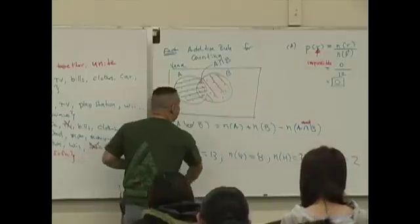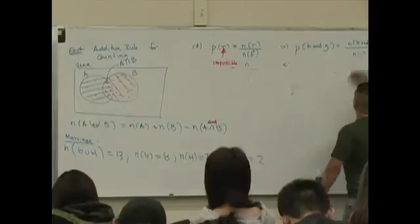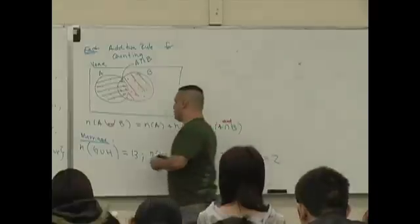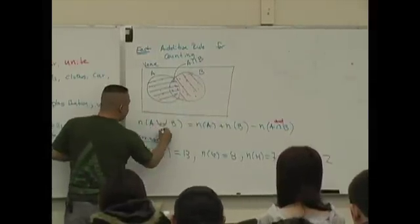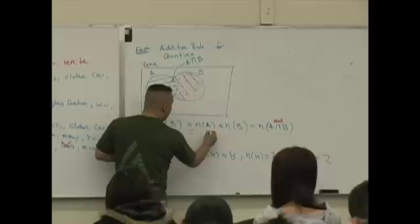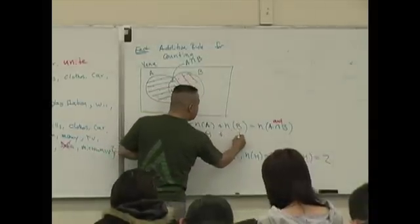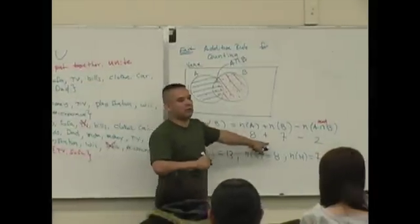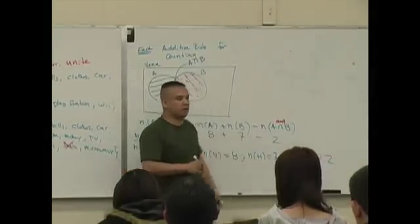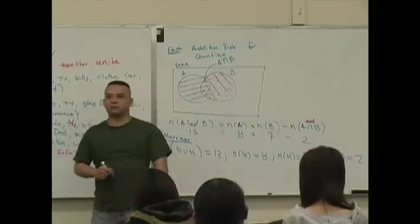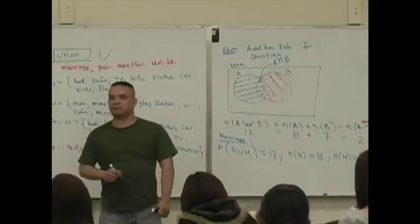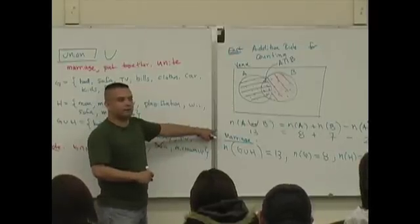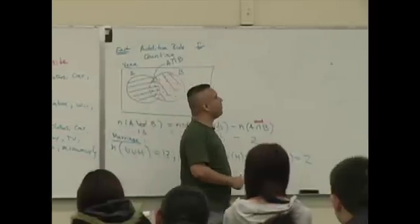Is it true that 13 is equal to 8 plus 7 minus 2? Is that true? What's 8 plus 7? 15. What's 15 minus 2? 13. Okay, so this is used for counting. So why do you care about counting if we're answering probability questions?